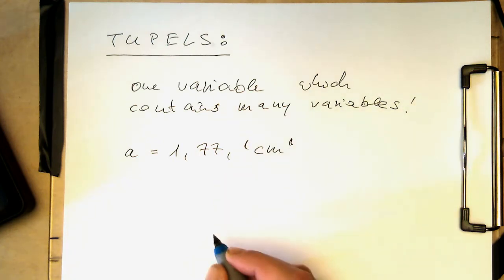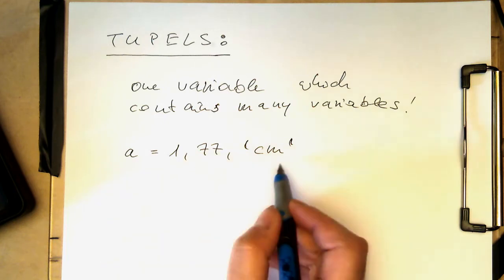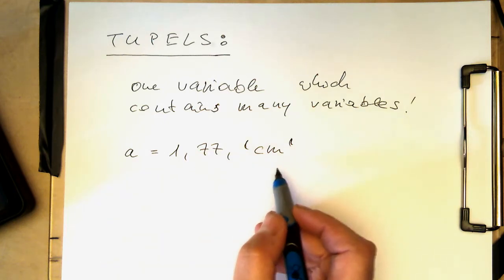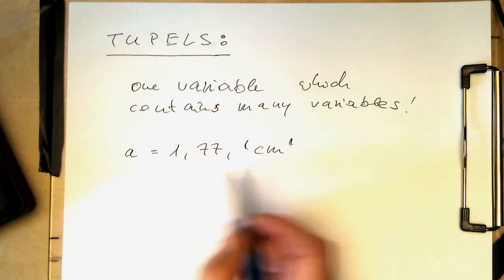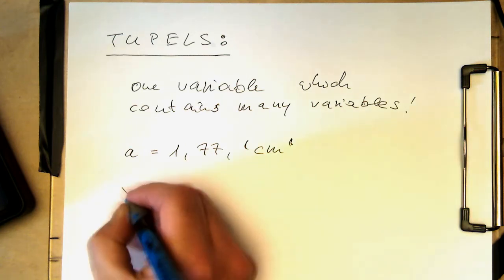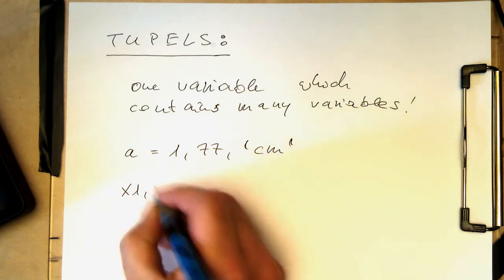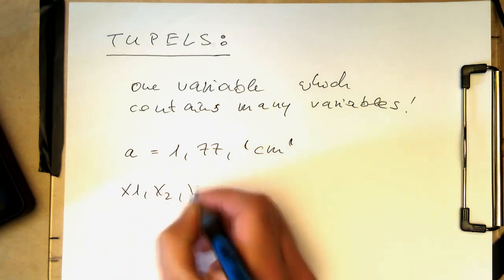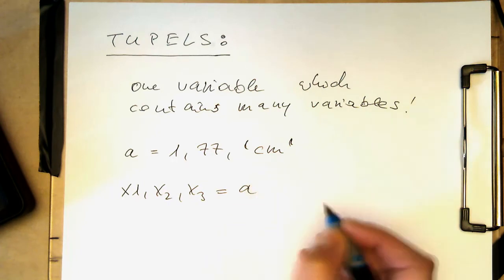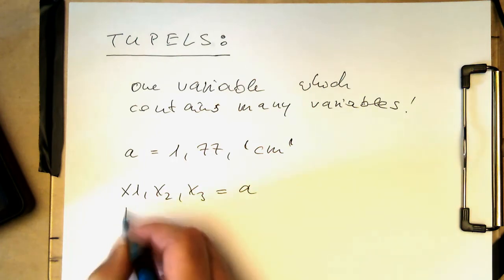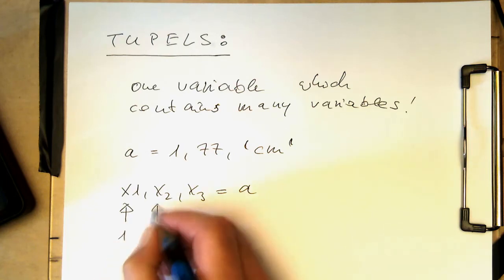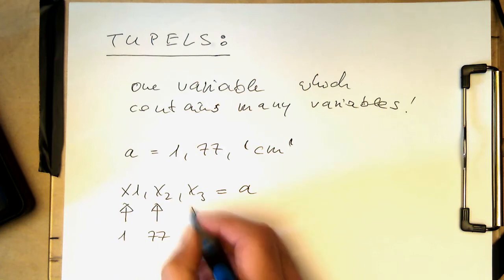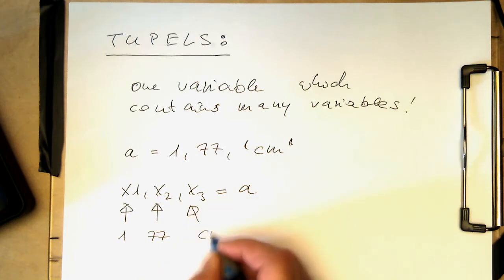And the idea is that a contains all these variables here. So now the interesting thing is we can also do the reverse. So now we've packaged these three constants into a, but we can also do something like x1, x2, x3 equals a. And then the 1 ends up in x1, so this becomes 1. Then the x2 becomes 77. Then the x3 becomes centimeter.